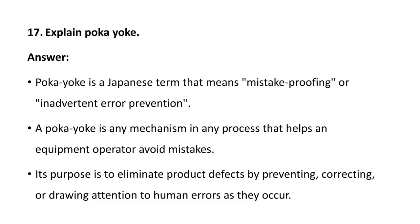Next question: explain the term Poka-yoke. Poka-yoke is a Japanese term that means mistake proofing. A poka-yoke is any mechanism in a process that helps an equipment operator avoid mistakes. Its purpose is to eliminate product defects by preventing, correcting, or drawing attention to human errors as they occur.